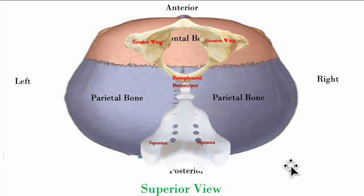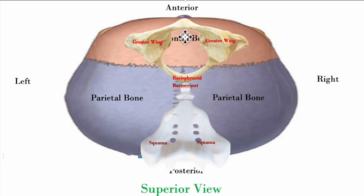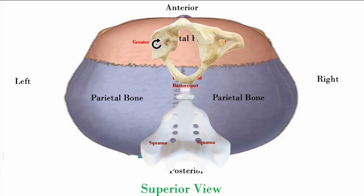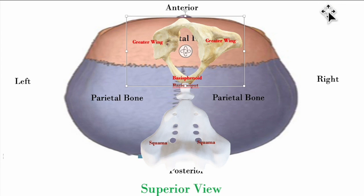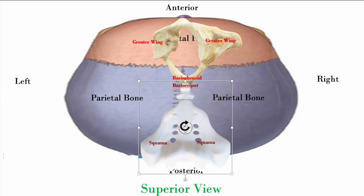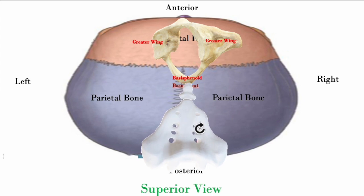Remember, wherever the basi-sphenoid goes, that's the direction the sphenoid is moving. In a physiological strain pattern, the basi-sphenoid and basi-occiput stay articulated — they stay close together. For torsion, we name it after the side where the greater wing is superior. In this example, the greater wing on the right side moves superiorly, so we call this a right torsion.